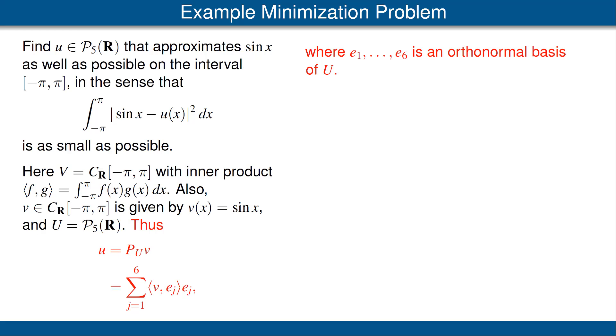With this setup, our previous theorem tells us that u, the best approximation to sin x, is equal to the orthogonal projection operator applied to v. And we even have a way of computing that. That'll be the sum shown at the bottom of the first column.